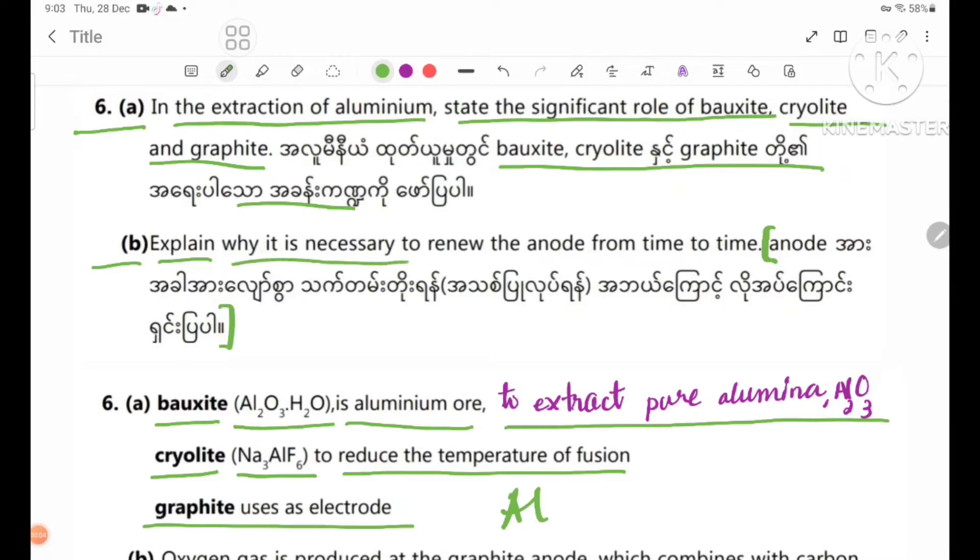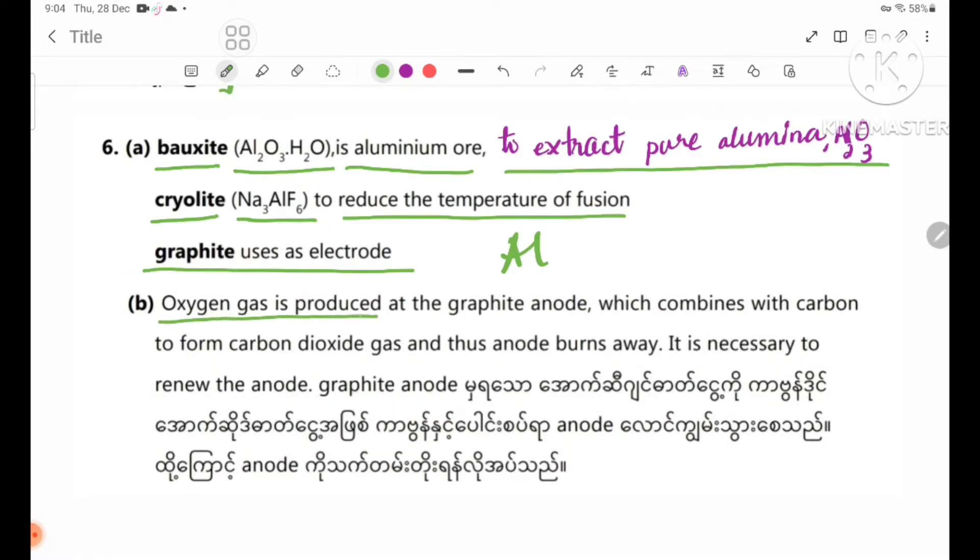Explain why it is necessary to renew the anode from time to time. Oxygen gas is produced at the graphite anode, which combines with carbon to form carbon dioxide gas, thus the anode burns away. It is necessary to renew the anode.